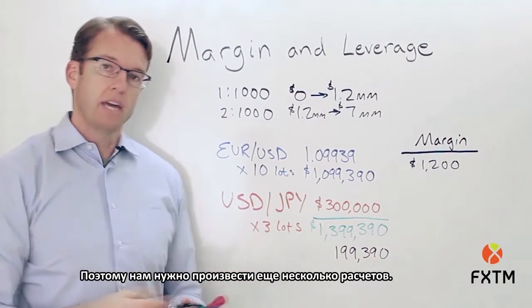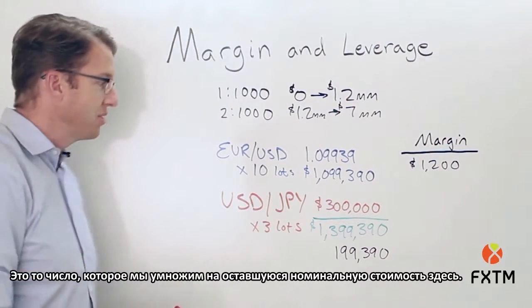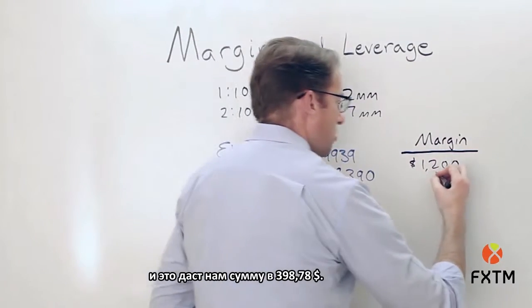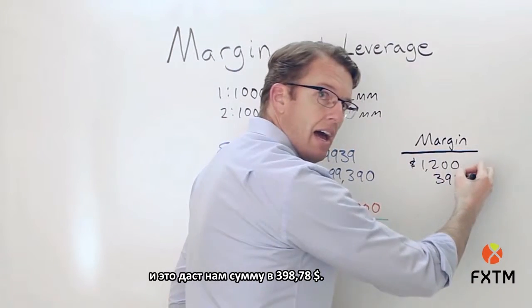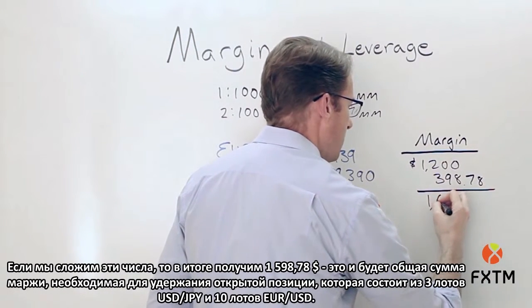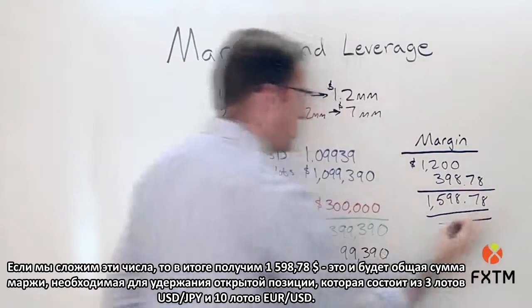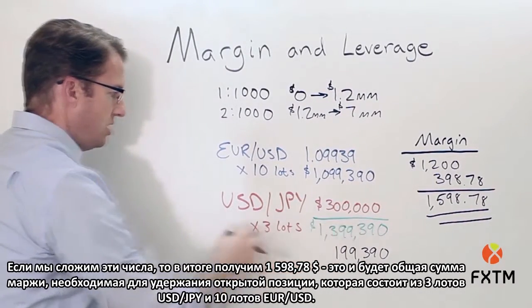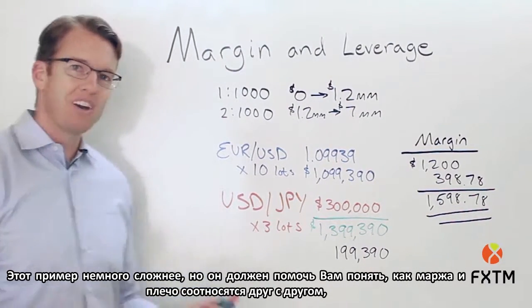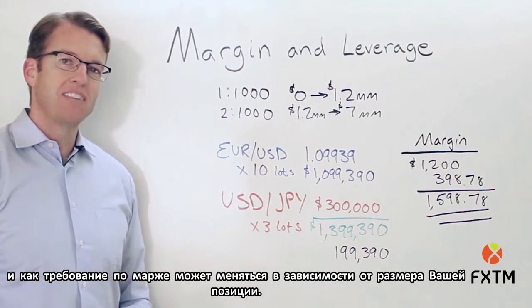For the remaining $199,390, we take 2 divided by 1,000, which equals 0.002, and multiply that by the remaining notional value — giving us $398.78. Adding the two together, the total margin requirement to hold open this combined position of 10 lots EUR/USD and 3 lots USD/JPY is $1,598.78. This should help you understand how margin and leverage relate to each other and how margin requirements change depending on the size of your position.